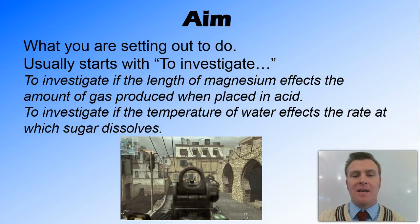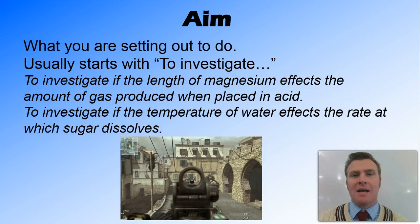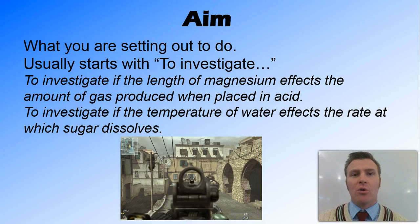The aim is what you're setting out to do - your experiment and what you're trying to do in it. It's usually in the format where it starts with 'to investigate', and remember we're looking at a cause-effect relationship, so it's to investigate that cause-effect relationship.